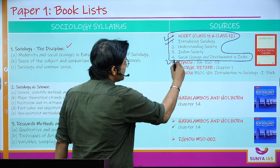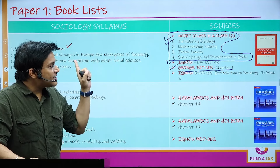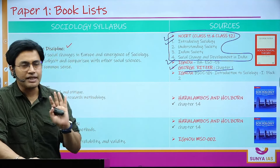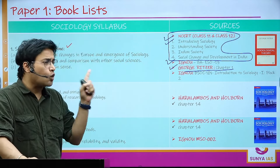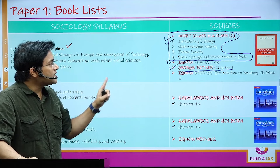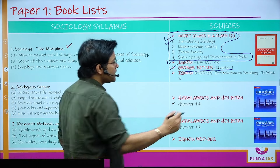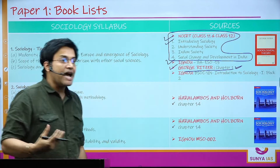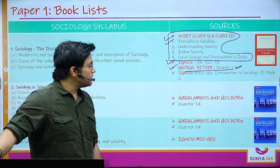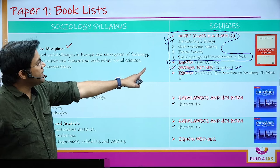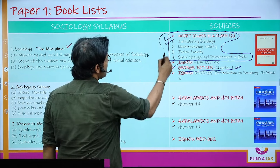After NCERTs, refer to IGNOU BA material ESO-13, and George Ritzer Chapter 1. George Ritzer is written from a strict sociological perspective with difficult language, so first go through NCERTs and IGNOU, then jump to George Ritzer. Chapter 1 discusses how sociology emerged as a distinct discipline due to issues that arose in Europe. Also refer to IGNOU BSOC-101, Introduction to Sociology, Block 2.